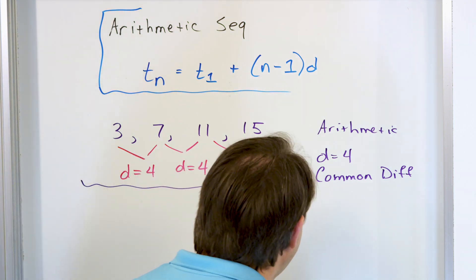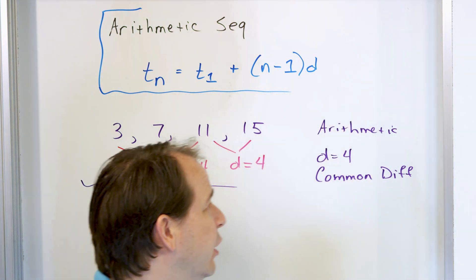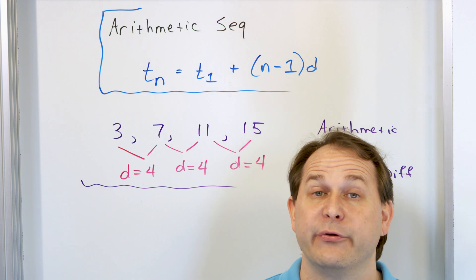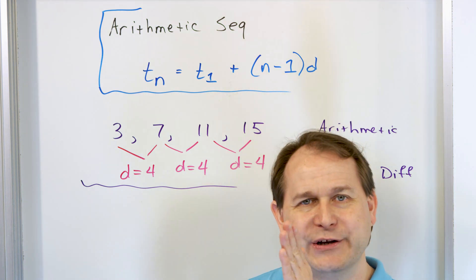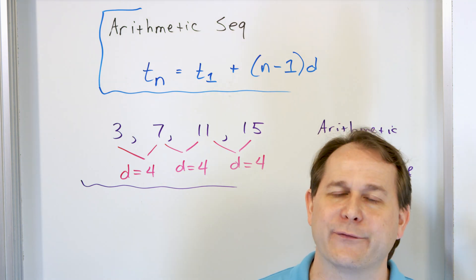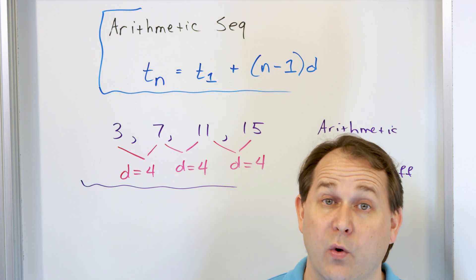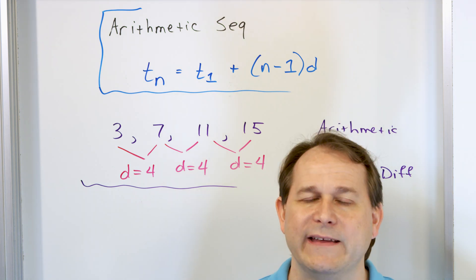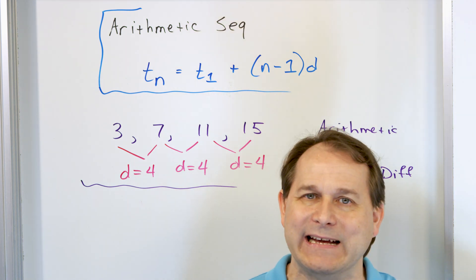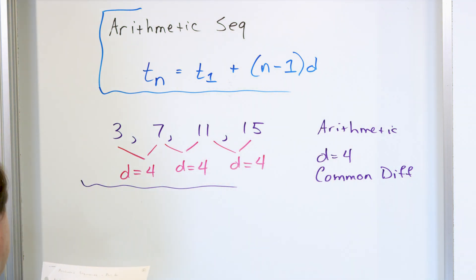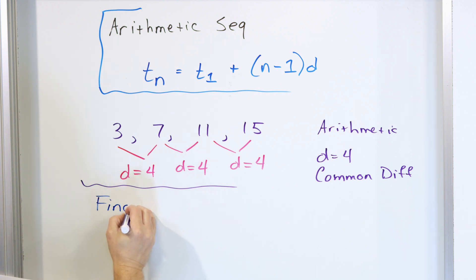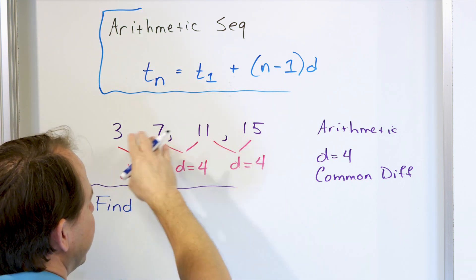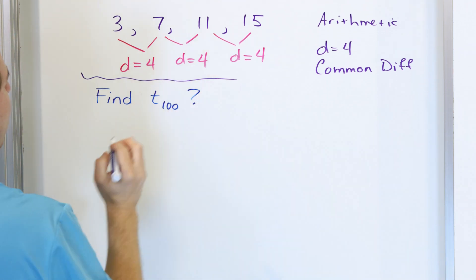The question I want to ask is: obviously, this allows us to predict the next term pretty easily by adding 4. But what if I want to find the 100th term? I could keep adding 4 over and over, but eventually I'll get there and it takes a long time. How do we write the formula to predict what the 100th term will be without adding constantly? Let's talk about how to find T sub 100.